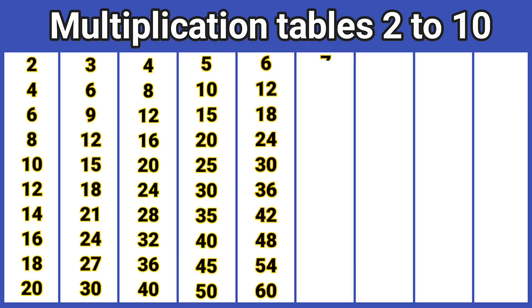7 1's are 7. 7 2's are 14. 7 3's are 21. 7 4's are 28. 7 5's are 35.